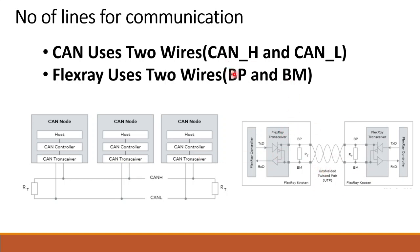The main difference in wiring is the naming: FlexRay uses Bus Plus and Bus Minus, while CAN protocol uses CAN High and CAN Low. These are the main differences in communication lines.